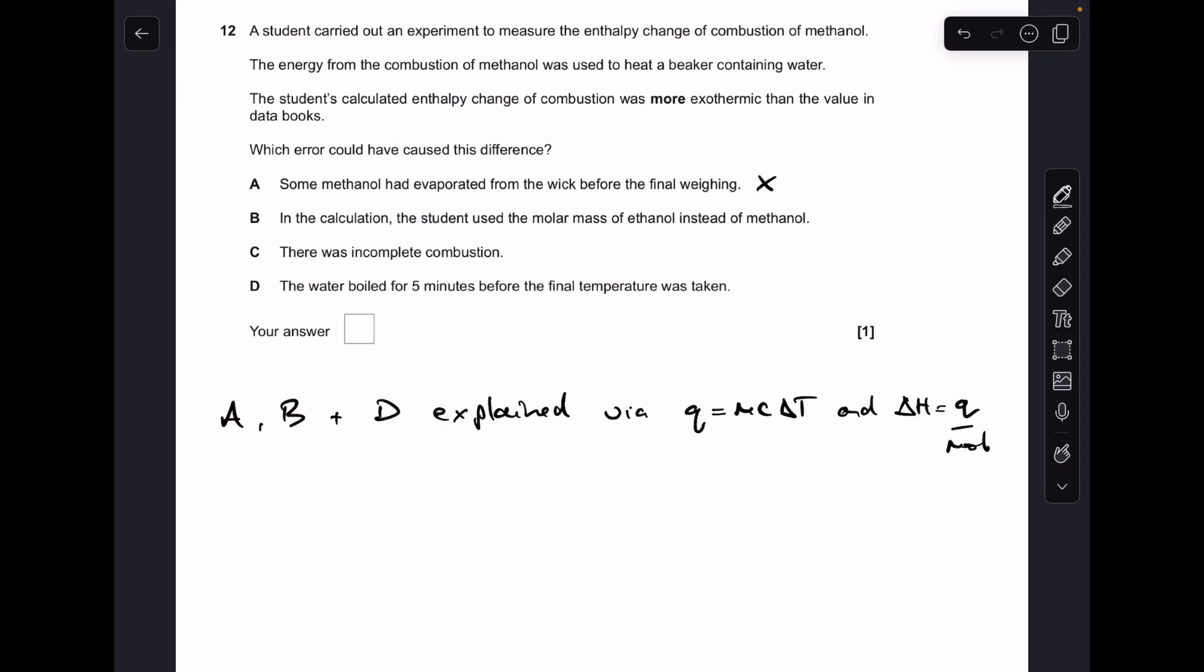Moving on to B, so we're assuming Q's the same, the only mistake they've made is they've used the MR of ethanol instead of methanol, so ethanol has a greater MR than methanol, so their moles is going to be lower than it should be, so when they divide their Q by these lower moles, they're actually going to get a larger value for delta H, so it's going to look more exothermic, so there's your answer.